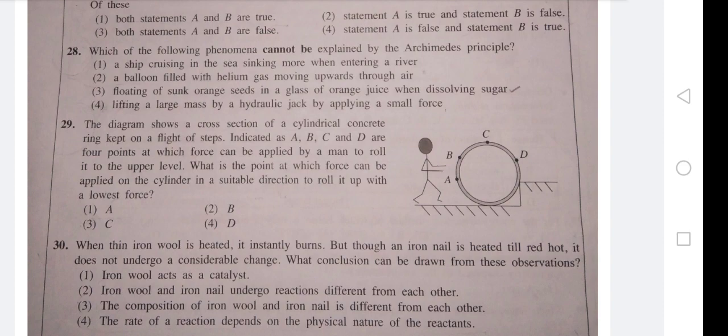Question 28: Which of the following phenomena cannot be explained by Archimedes' principle? A ship crossing in the sea sinking more when entering a river. A balloon filled with helium gas moving upwards through air. Floating of sunk orange seeds in glass of orange juice when dissolving sugar.